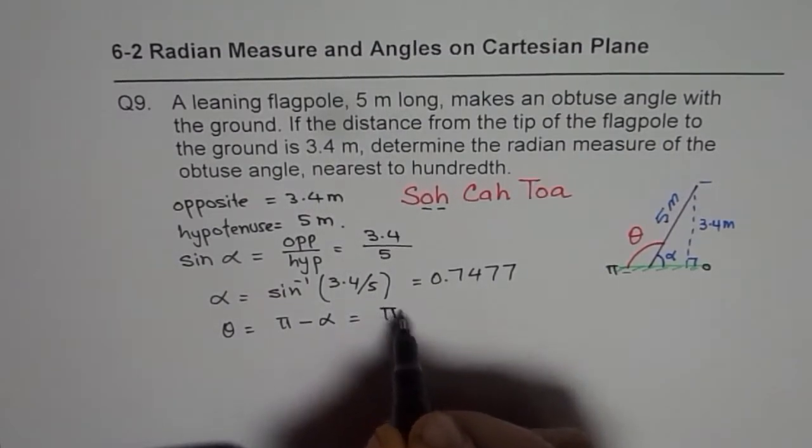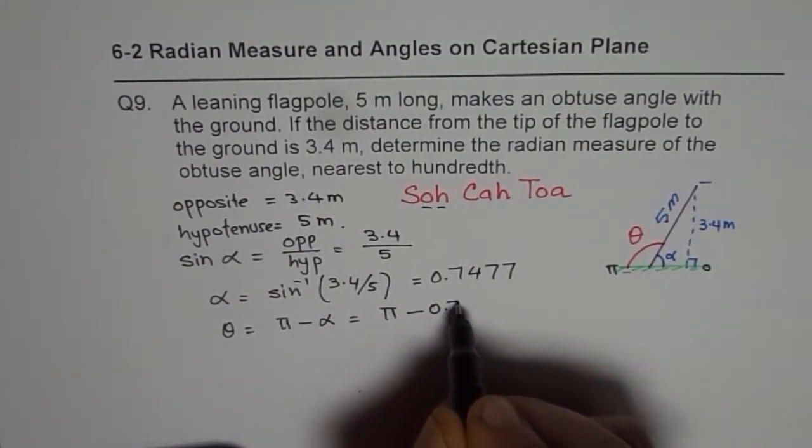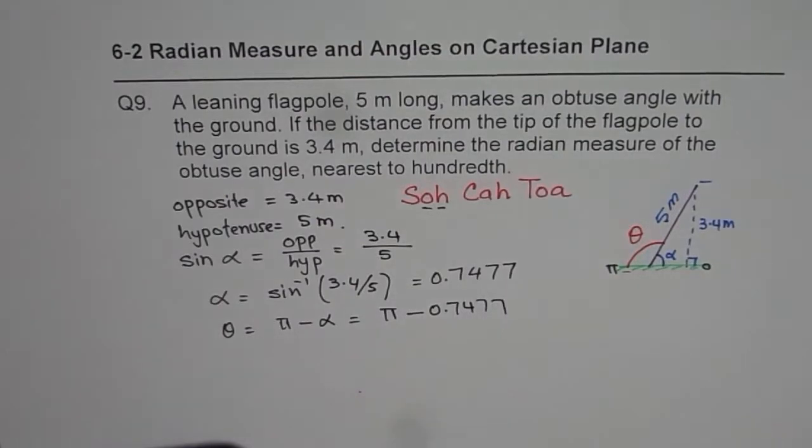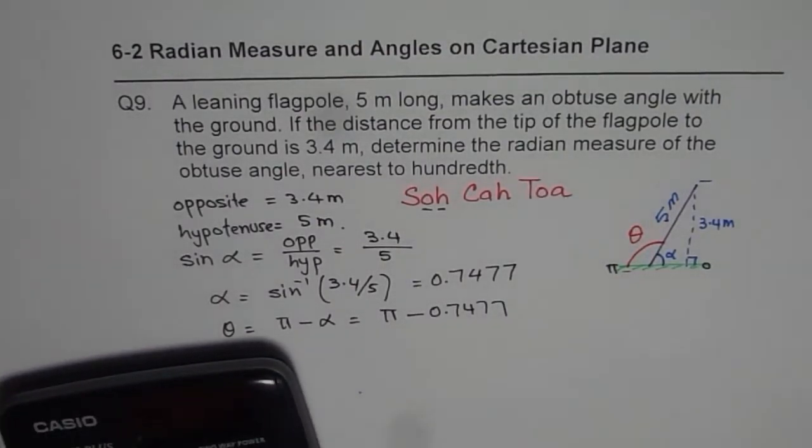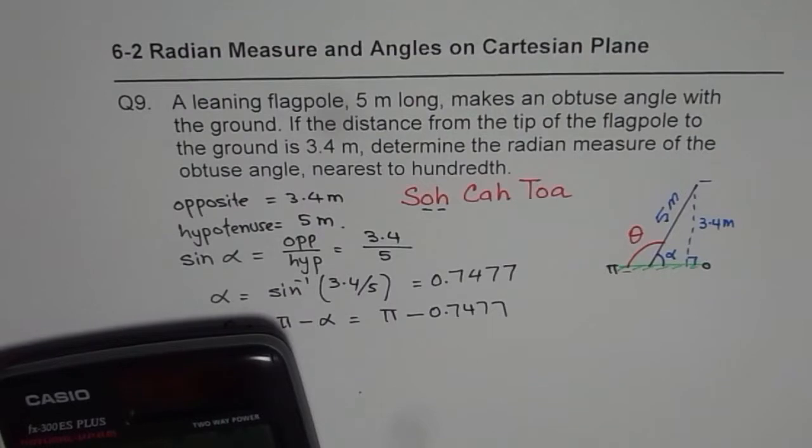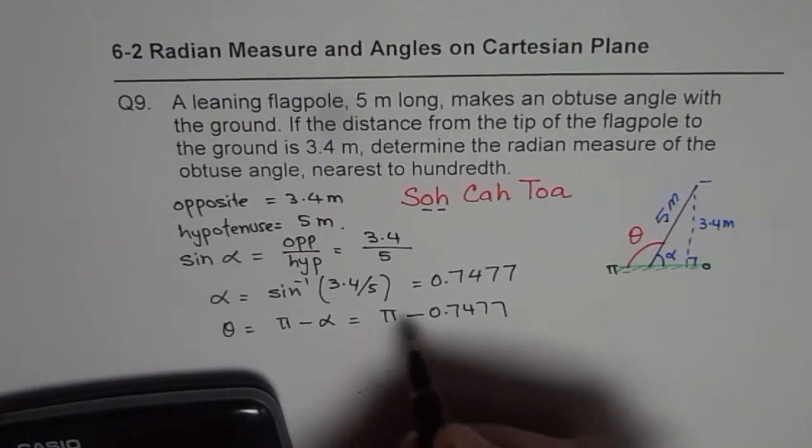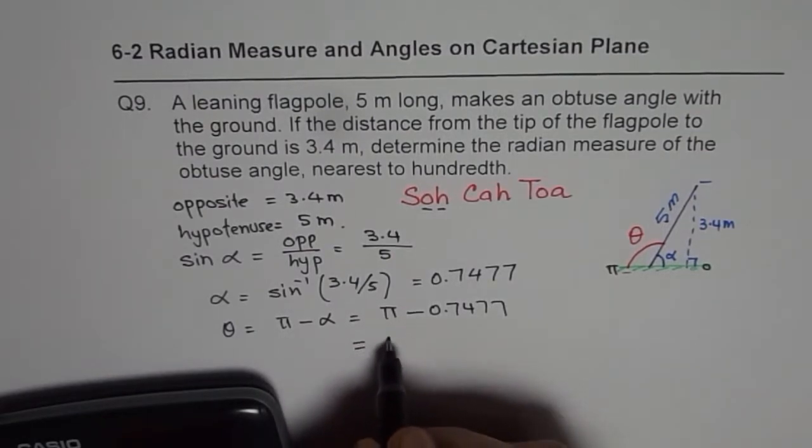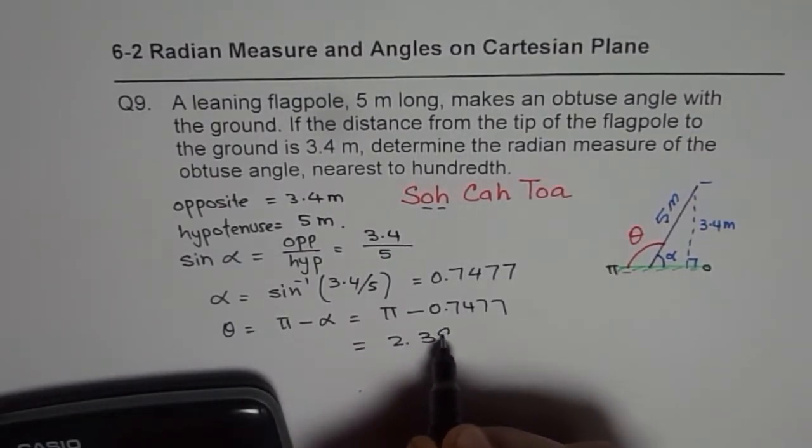So it is pi minus 0.7477. Since I have this angle I will just do minus pi and take negative of that. So we get 2.393. This angle for us is 2.3938.